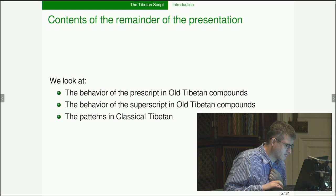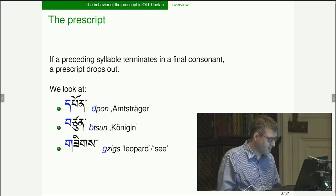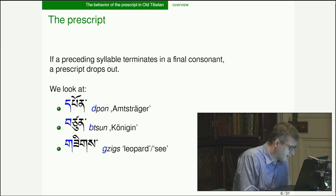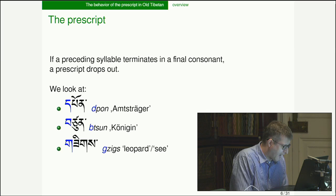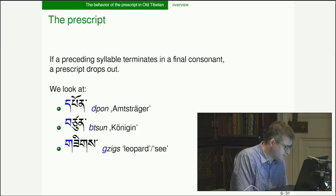We'll look at the behavior of prescripts in ultimate compounds, the behavior of superscripts in ultimate compounds, and then the pattern in classical Tibetan. Let's look at the prescript, examining three morphemes: 'pun,' meaning 'official'; 'tsun,' meaning 'queen'; and 'zik,' meaning 'leopard' or 'snow leopard.'